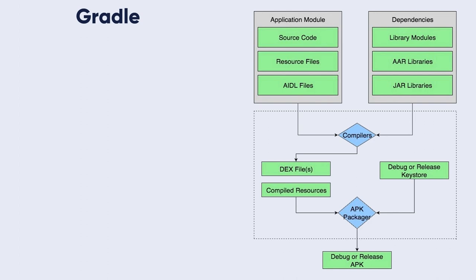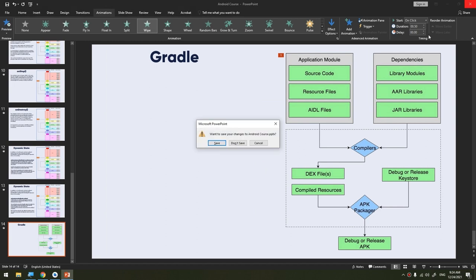Before generating the final APK, the packager uses the zip align tool to optimize your app to use less memory when running on devices. At the end of the build process, you have a debug or release APK or AAB ready to deploy, test, or release to external users. Now let's move to Android Studio and learn about the Gradle build files for the app model and the project model.